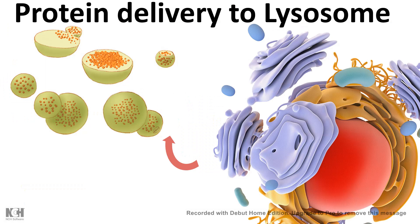In this video I'll talk about protein delivery to lysosome. Proteins are folded in the ER, sorted in the Golgi bodies, and then distributed to several locations inside the cell — some are secreted out, or some are delivered to specific organelles. As an example, we will track a path of a protein being delivered to the lysosome, which is an organelle containing many hydrolytic enzymes.